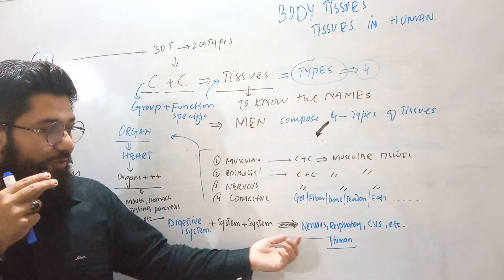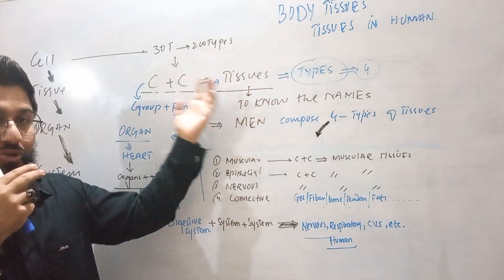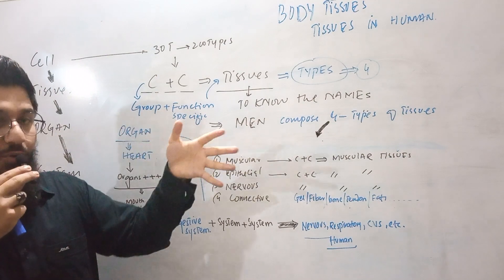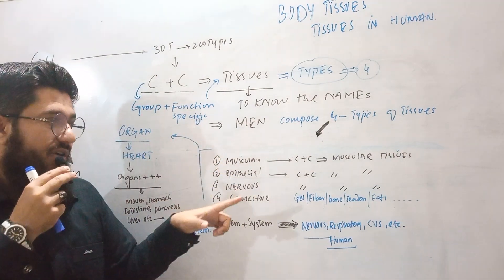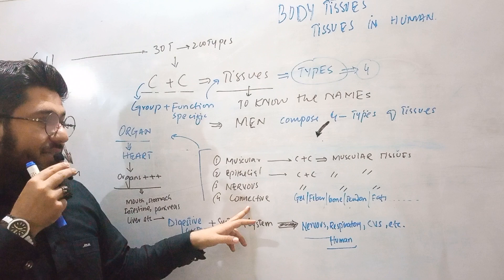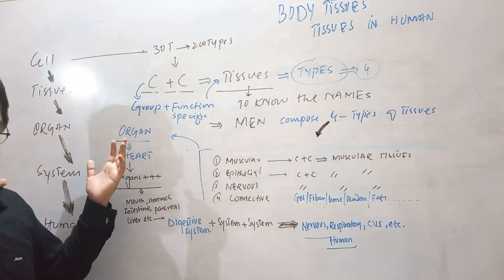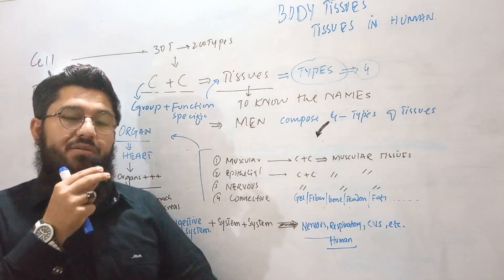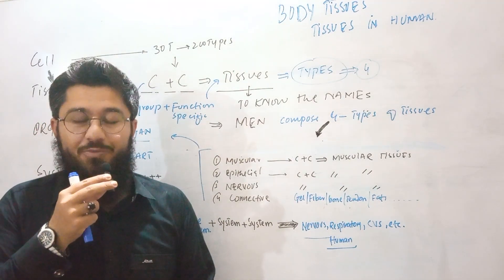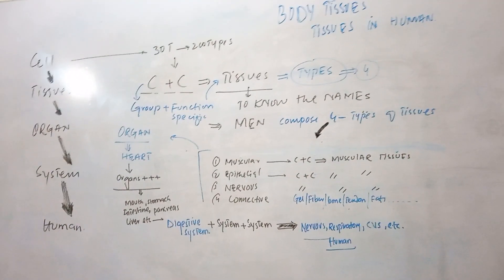That's it. Cells group together to make tissues; tissues group together to make organs; organs group together to make systems; and systems group together to make a human. I hope you got it. If you still have confusion, you can ask in the comment box, and don't forget to tell your friends about Dr. UUT Lectures. Thank you for watching.